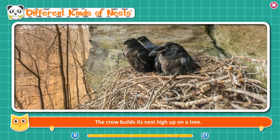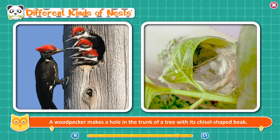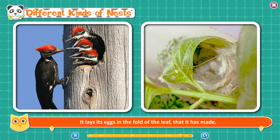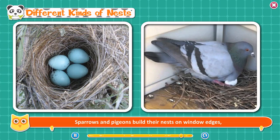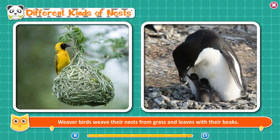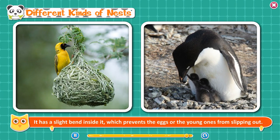Different kinds of nests. The crow builds its nest high up on a tree. A woodpecker makes a hole in the trunk of a tree with its chisel-shaped beak. The tailor bird makes its nest by sewing leaves together using its sharp beak and lays its eggs in the fold of the leaf. Sparrows and pigeons build their nests on window edges, ventilators, and even on ceiling fans using dry leaves and twigs. Weaver birds weave their nests from grass and leaves with their beaks — the nest hangs down from branches and has a slight bend inside which prevents the eggs or young ones from slipping out.